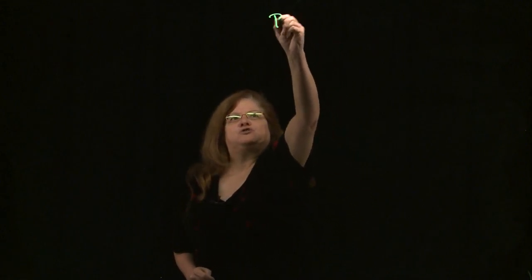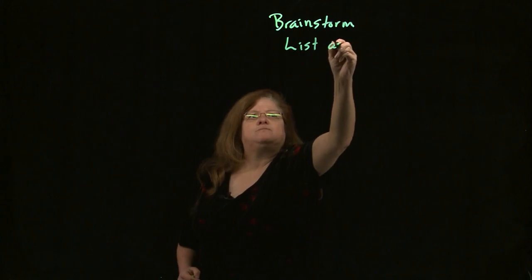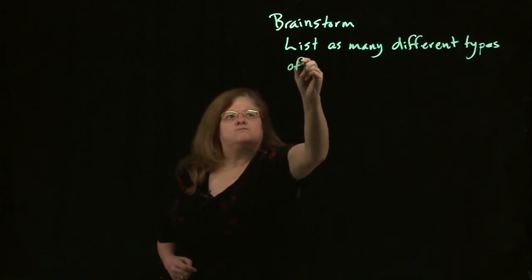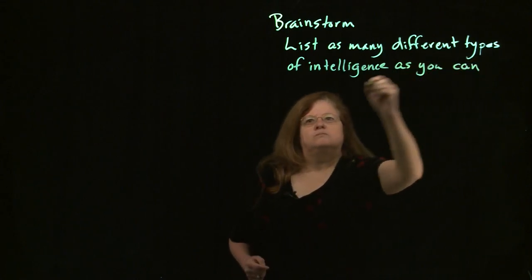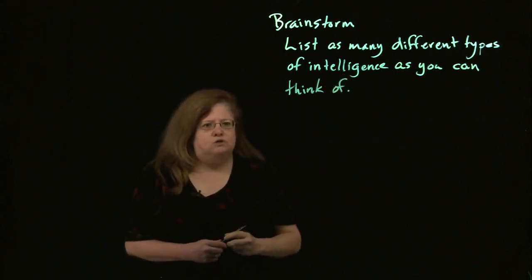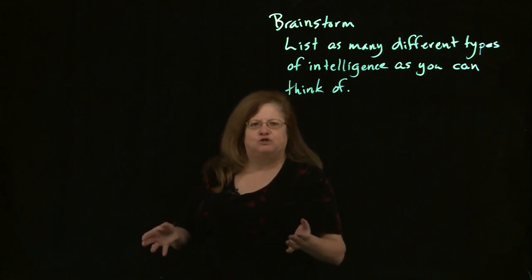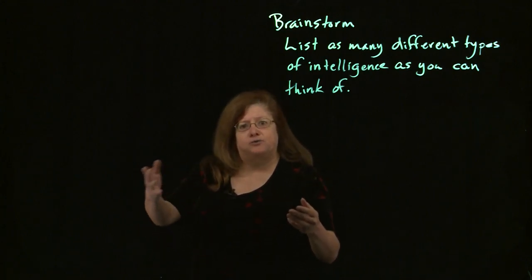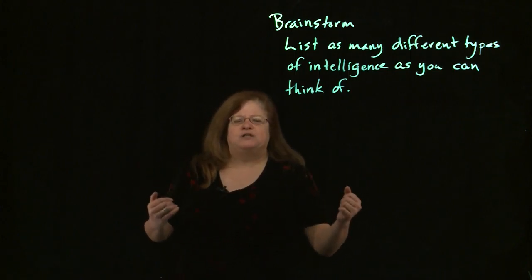What I want you to do to start with is look at other types of intelligence. I want you to brainstorm and list as many different types of intelligence as you can think of. If you're in a classroom, divide into small groups and each group create a list. If you're by yourself, get a piece of paper and write down a list of all the types of intelligence you can think of — not just the book learning, although those are intelligences, but what are some other intelligences you might have. Pause this video and brainstorm a list of types of intelligence.